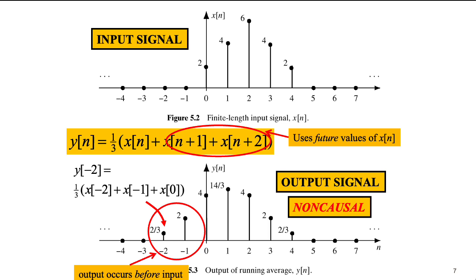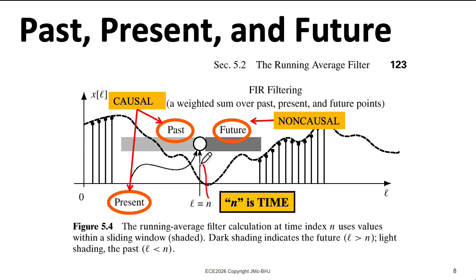We say a system is causal if it doesn't depend on the future. It can only depend on the present and the past. Now, it doesn't have to depend on the present and the past. You could make a nihilistic system that was just y of n equals 0. This is certainly causal because it doesn't depend on future values. But incidentally, it doesn't depend on the present or the past either. It's also not a very useful system. If a system depends at most on the present, and doesn't depend on the past or the future, we say it is memoryless.